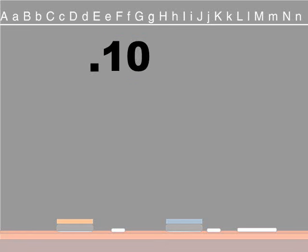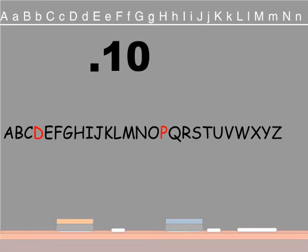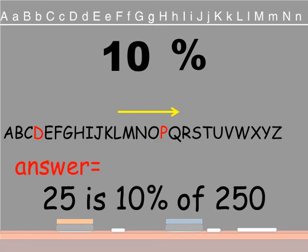And so we have 25 divided by 250 equals .10. Now .10 is a decimal number. We're looking for a percentage. So we're going to do the opposite of what we did before. We went from percent to decimal. Now we're going to have decimal to percent. So we're going to look at our alphabet and we'll notice that P is to the right of D. So we're going to move our decimal point two places to the right. And we're going to add our percent sign. So our answer is 25 is 10% of 250.